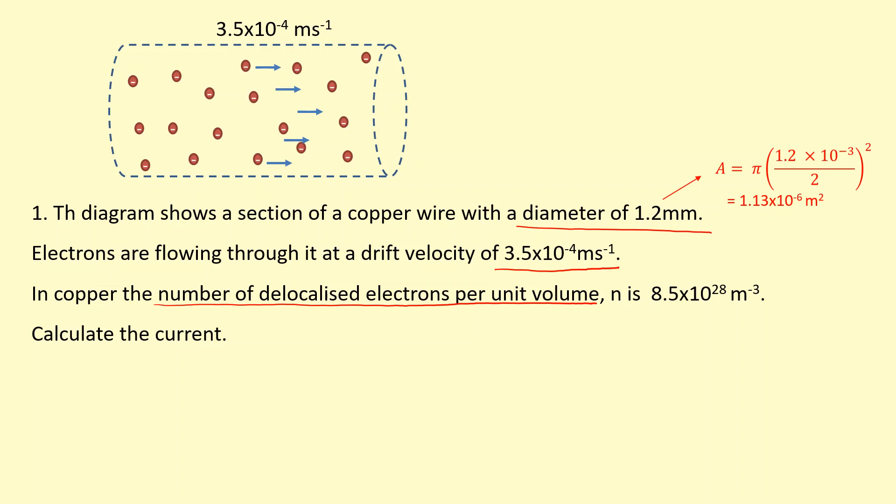Calculate the current. So current, we know, is a rate of flow of charge. So, I is equal to Q over T. We're going to figure out how much charge in Coulombs is flowing past per second. So I want to figure out how much charge is inside this volume here.